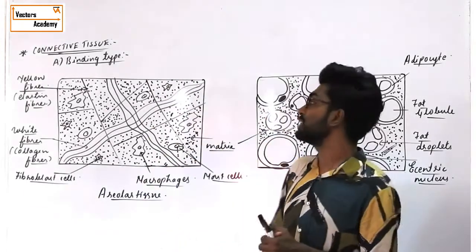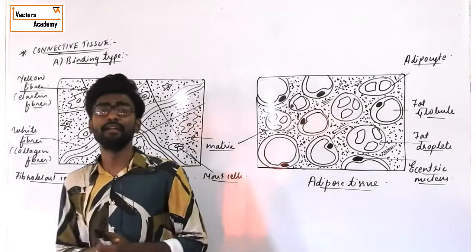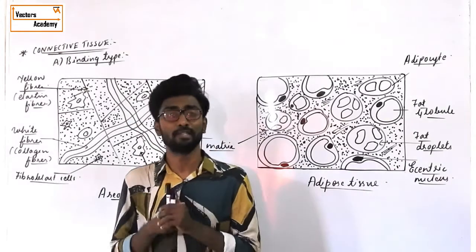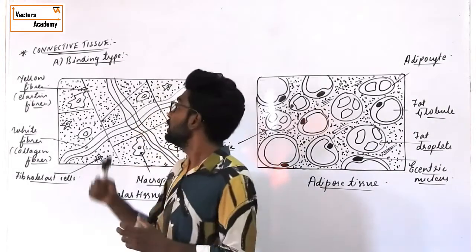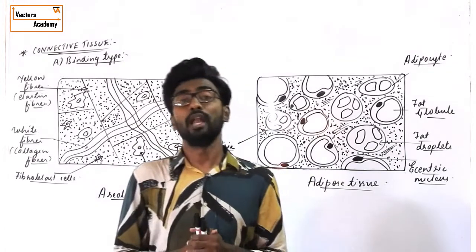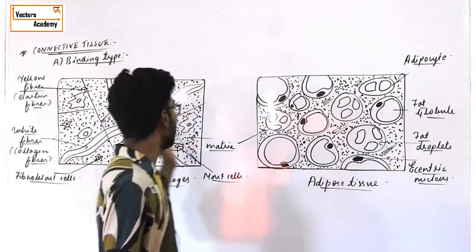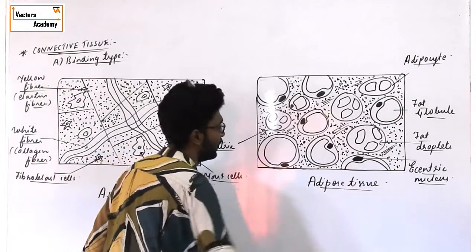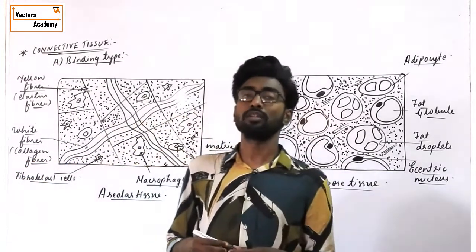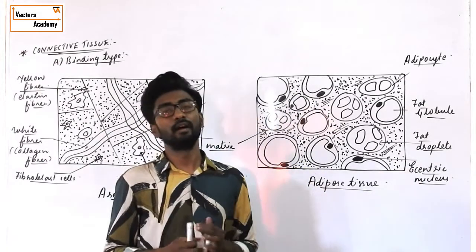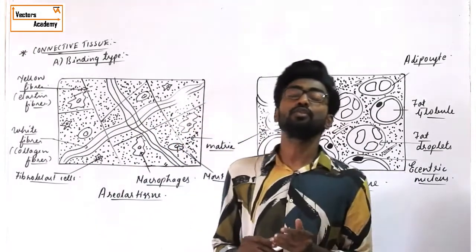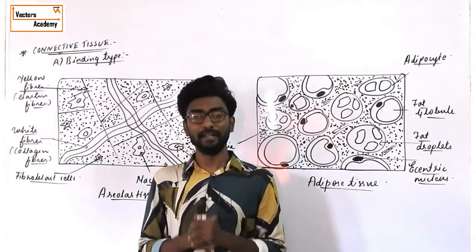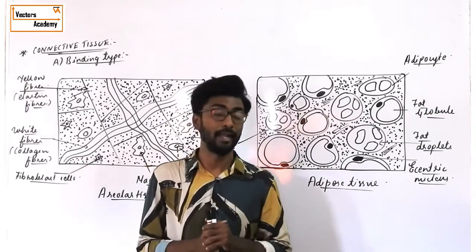Connective tissue is mesodermal in origin. It contains its own blood vessels. This type of connective tissue also contains a large amount of matrix — a large amount of cytoplasm scattered all over the cell. Connective tissue is divided into two important types: the first is called binding type and the second is called supporting type.